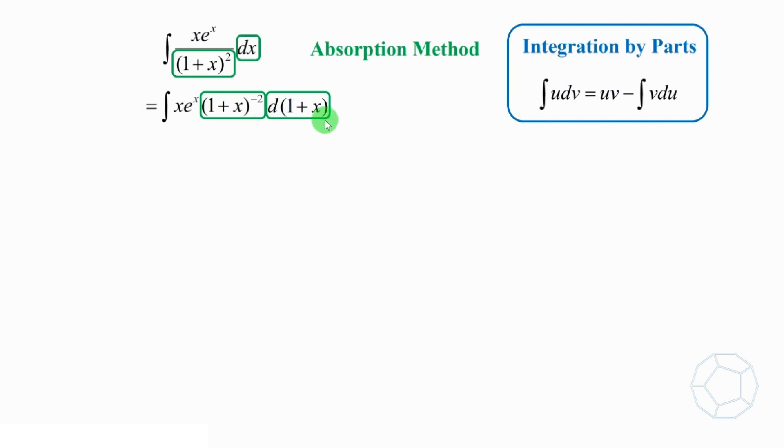Now, the following part is the key idea of the whole question. Make sure that you get it. Let's focus on this term. It looks like the form t to the power of negative 2 dt. If we integrate it into the differential, then it is equal to negative dt to the power of negative 1.